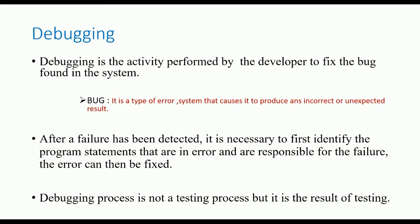What is a bug? A bug is a type of error that causes the software to produce an incorrect or unexpected result. After a failure has been detected, it is necessary to first identify the program statements that are in error and responsible for the failure. The error can then be fixed. We first test the software, identify any bugs or errors, and then we can fix them.